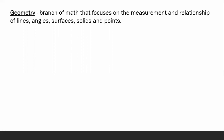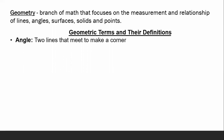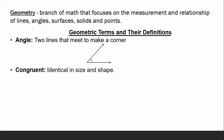There are terms we need to know about geometry. The first term is angle: two lines that meet to make a corner. Next, congruent means identical in size and shape. For example, angle G and angle S are congruent because they have the same measure, which is 42 degrees.